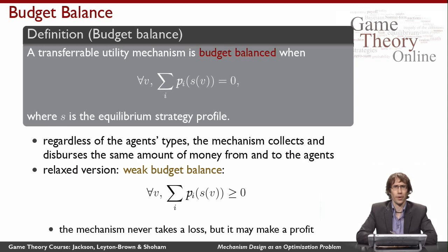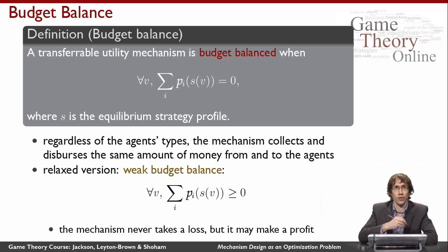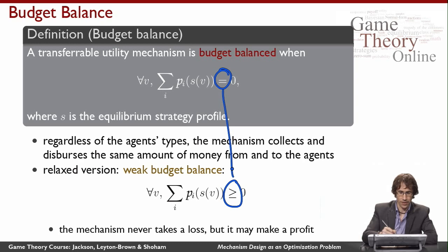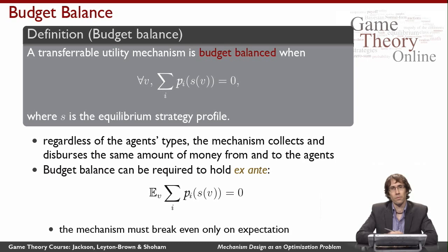Why would I want the mechanism not to make any money? It might be that I really want money only to get around impossibility theorems, and I just want the mechanism to make good decisions. On the other hand, I might be happy to make money but just be concerned about ever losing money. In that case, I would want a relaxed version called weak budget balance — I replace the equality with an inequality saying that in equilibrium it's never the case that I lose any money, but I'm quite happy to make a profit.